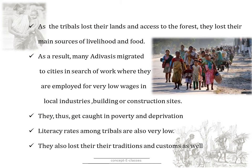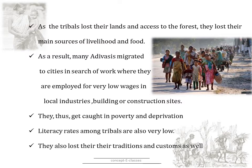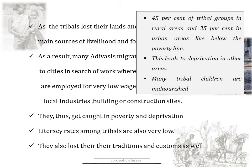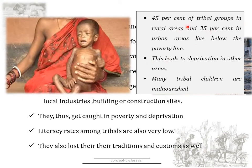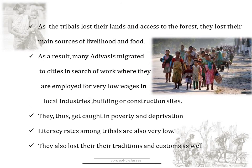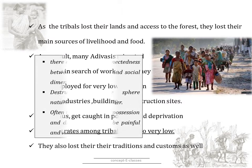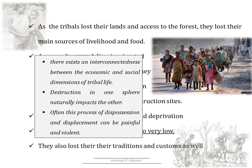As tribals lost their land and access to the forest, they lost their main sources of livelihood. Many Adivasis migrated to cities in search of work, employed for very low wages in local industries, buildings and construction sites. About 45% of tribal groups in rural areas and 35% in urban areas live below the poverty line. Many tribal children are malnourished, and literacy rates among tribals are very low. When Adivasis are displaced from their land, they lose much more than their source of income — they lose their traditions and customs as well. There always exists a connection between the social and economic dimensions of tribal people, so destruction in any one would affect the other. This process of displacement can be painful and violent.